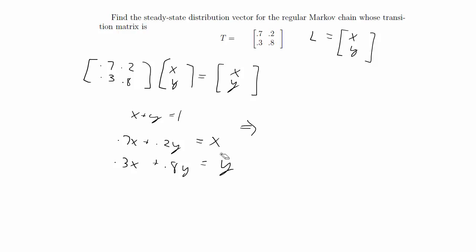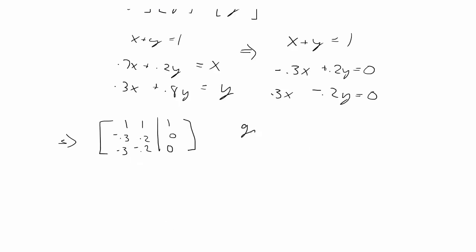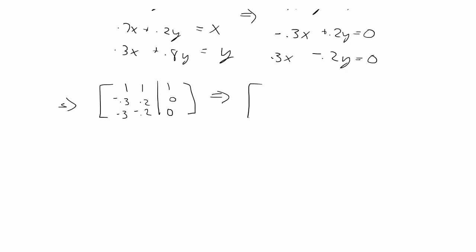The next thing we want to do is move X to the left side and move Y to the left side so that we have zero on the right. Then we can rewrite the coefficients in a matrix, do row reduction, and that will give us the solution. So we have negative 0.3X plus 0.2Y equals 0, and 0.3X minus 0.2Y equals 0. Rewriting as an augmented matrix, we use Gauss-Jordan elimination, or just row reduction on a calculator.